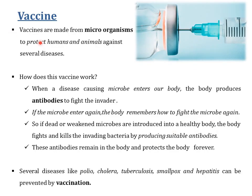Vaccines are also made from microorganisms to protect humans and animals against several diseases. When a disease-causing microbe enters the body, the body produces antibodies to fight the invader, and remembers how to fight it if it enters again. When a dead, weakened, or inactive microbe is introduced into a healthy body, the body fights and kills it by producing suitable antibodies, which remain in the body and protect it from that disease-causing microbe forever. Diseases like polio, cholera, tuberculosis, smallpox, and hepatitis can be prevented by vaccination.